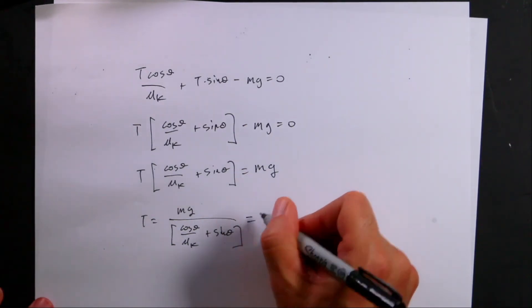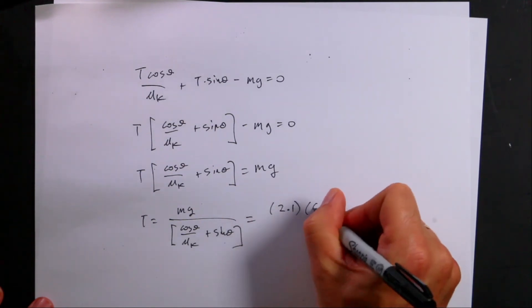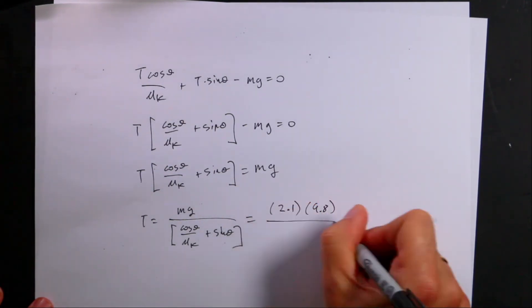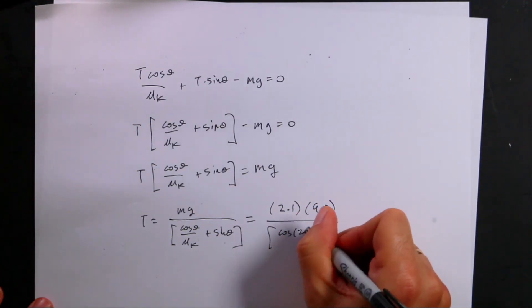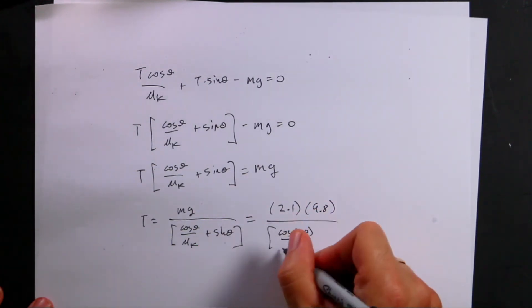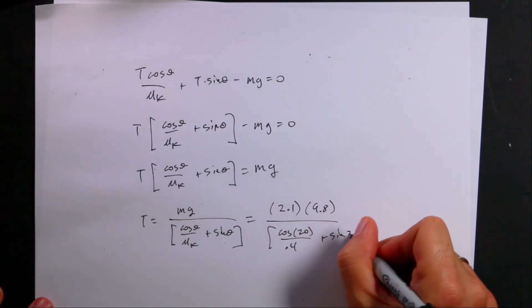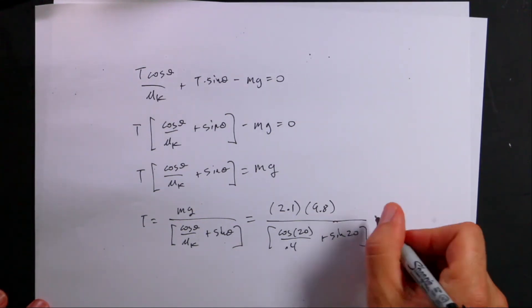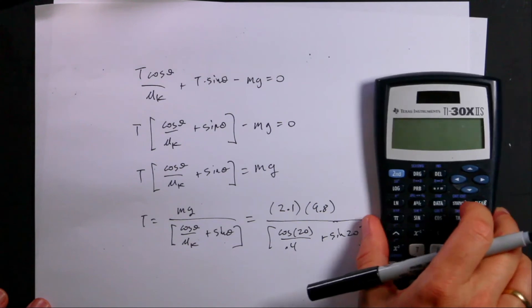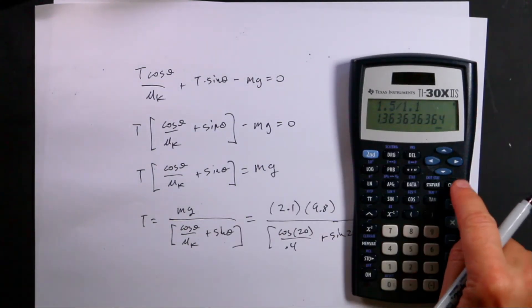And so now I can put in my numbers. Let's put in the mass was 2.1. I'm going to leave off the units. G is 9.8. Then I have cosine of 20 divided by mu k was 0.4 plus sine of 20. Okay. Let's do that in a calculator. I don't normally like calculators, but let's do it anyway. So here's my calculator. Nice, cheap, inexpensive one. Clear.